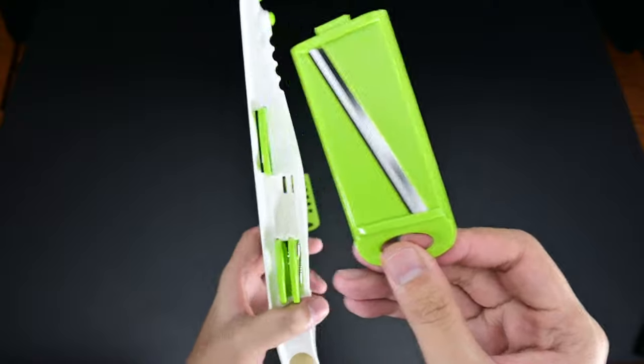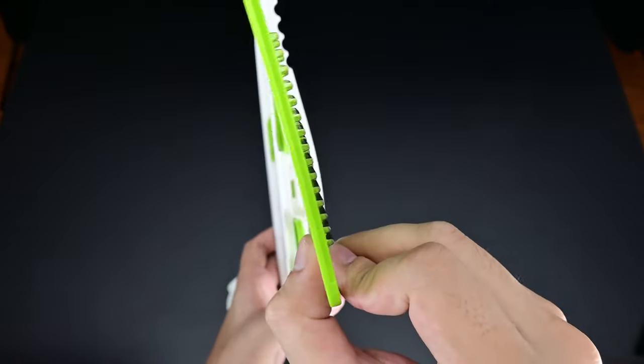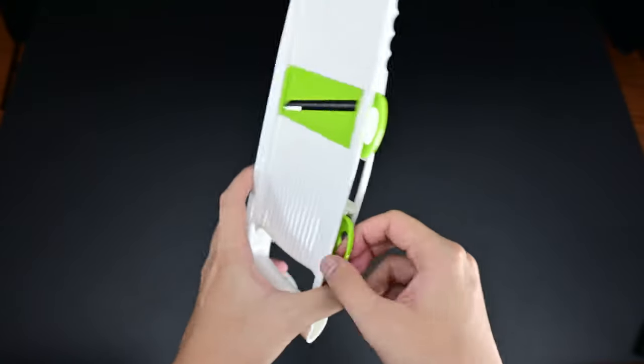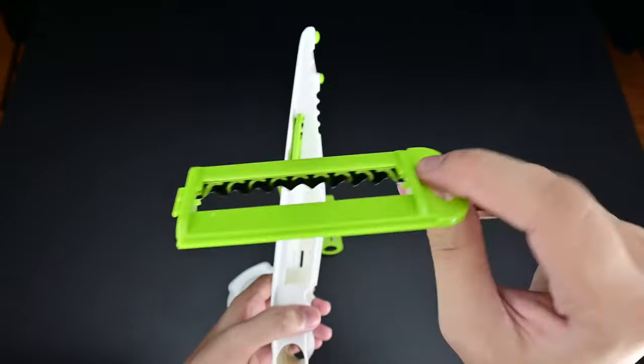Easily inserted into the mandolin slicer. Here we have the actual blade for your potato chips. We have an even thinner julienne for your other ingredients such as onions. And lastly, we have here a waffle fries cutter. I'll show you all of these later.